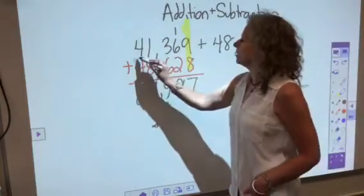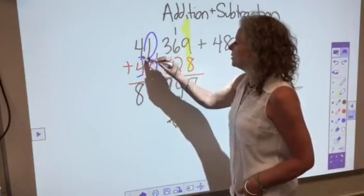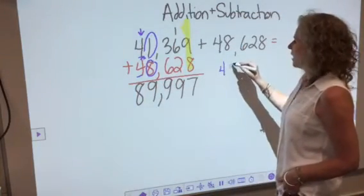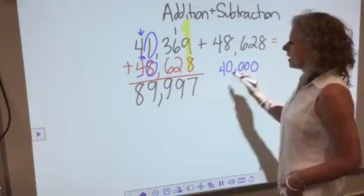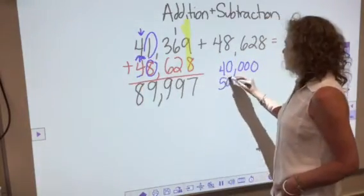So I'm going to look at these biggest numbers. I'm going to round each of them. The first number is going to round down to 40,000. The next number is going to round up to 50,000.